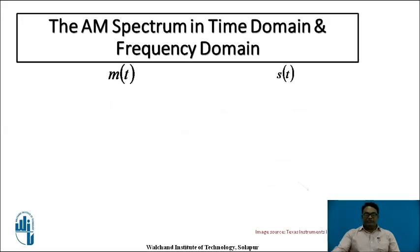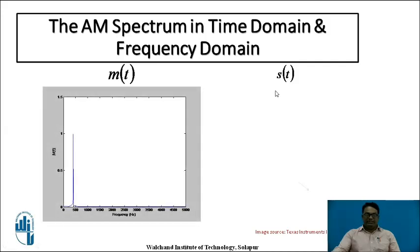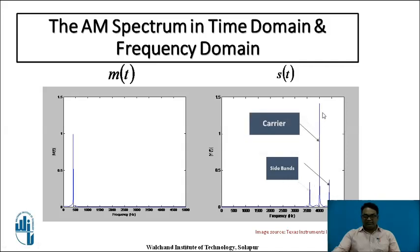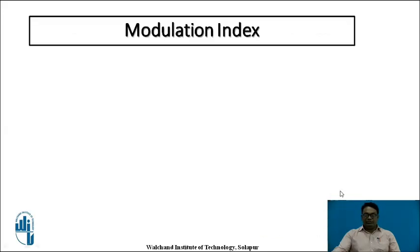In the frequency domain, M(t) represents the modulating signal and S(t) is the modulated signal. M(t) is represented by a single frequency band, while S(t), the modulated signal, is represented in terms of two sidebands and a carrier signal. The carrier signal is shown in the center, with the two sidebands on either side.